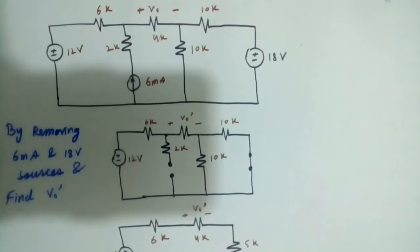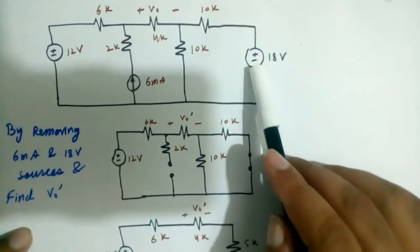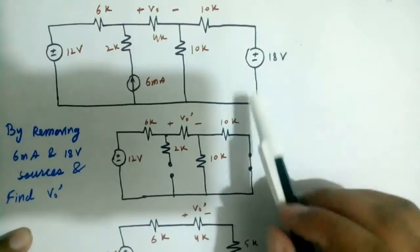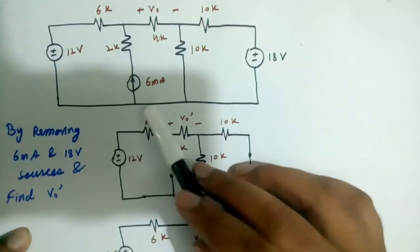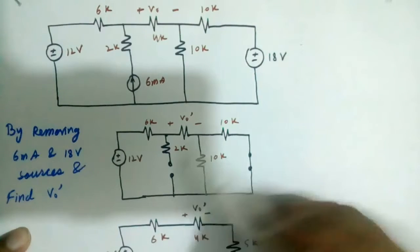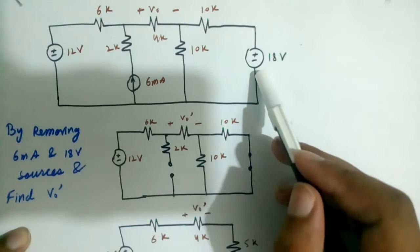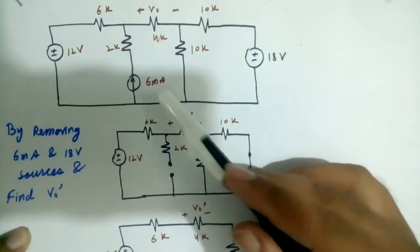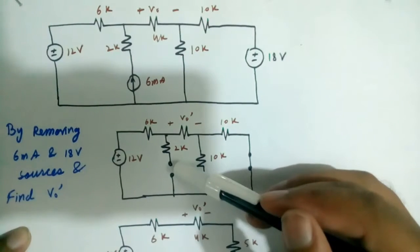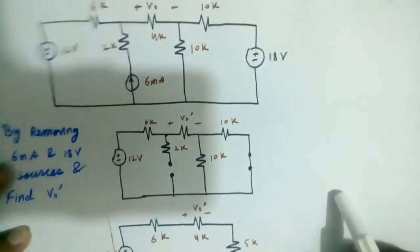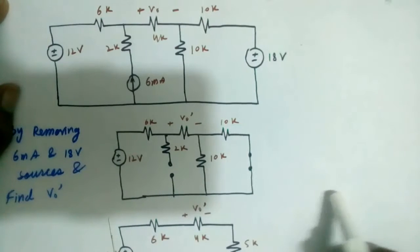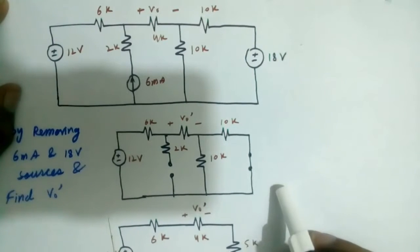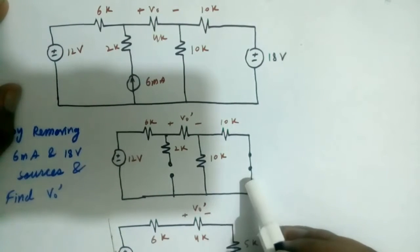In this circuit we want to apply superposition theorem. First of all we remove the 18 volt voltage source and the 16 milliampere current source. By removing the voltage source we short the circuit, and by removing the current source we open the circuit. So now a simplified circuit is there.